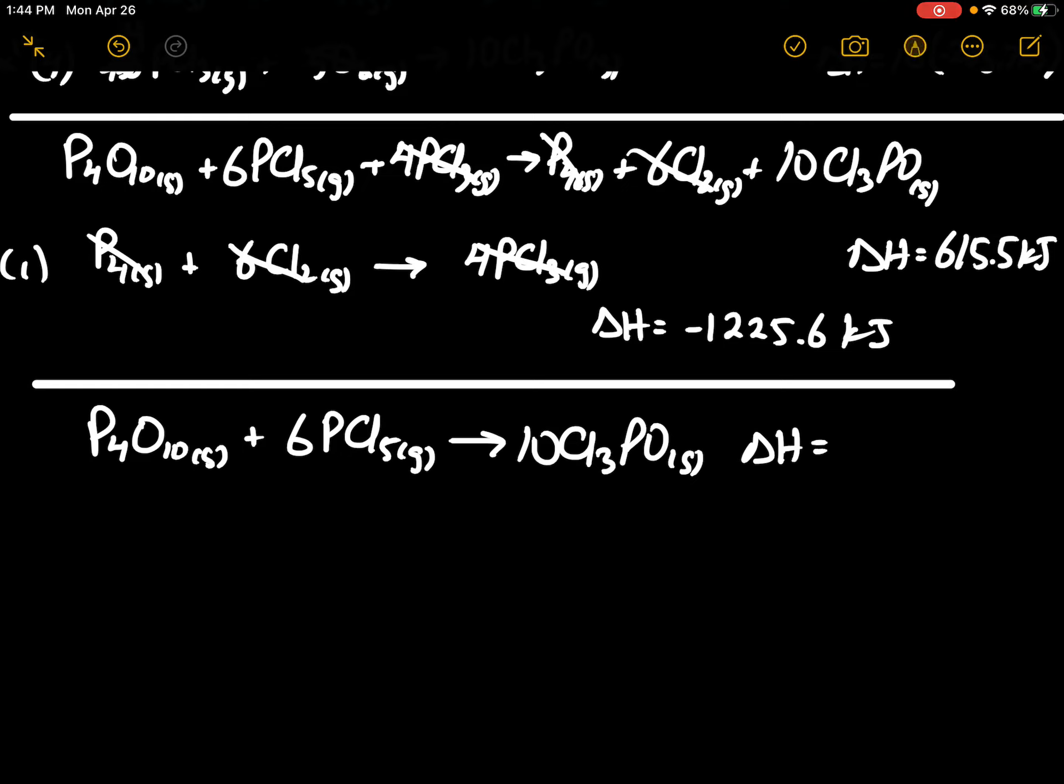Delta H finally works out to negative 610.1 kilojoules. So here is our final answer.